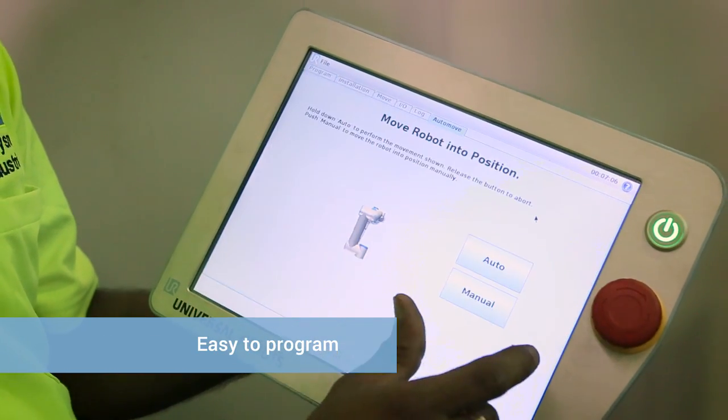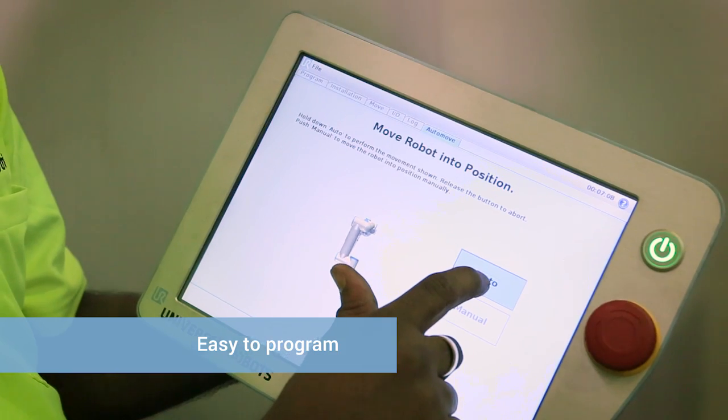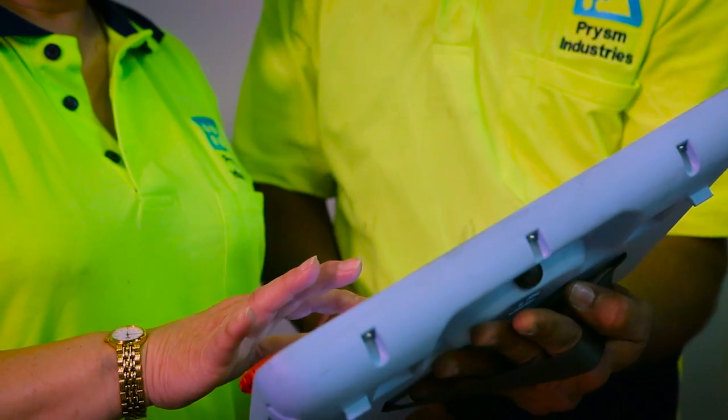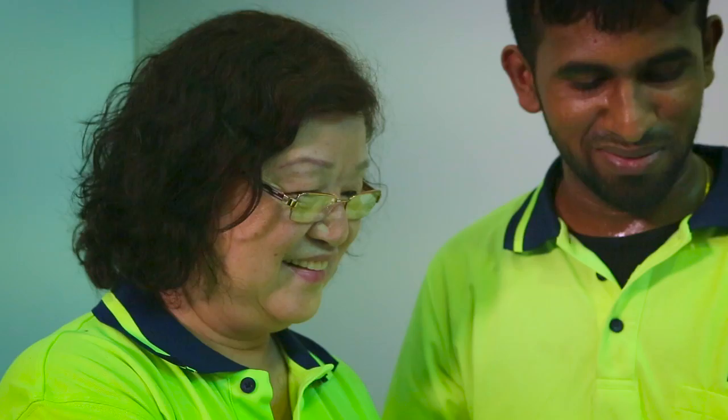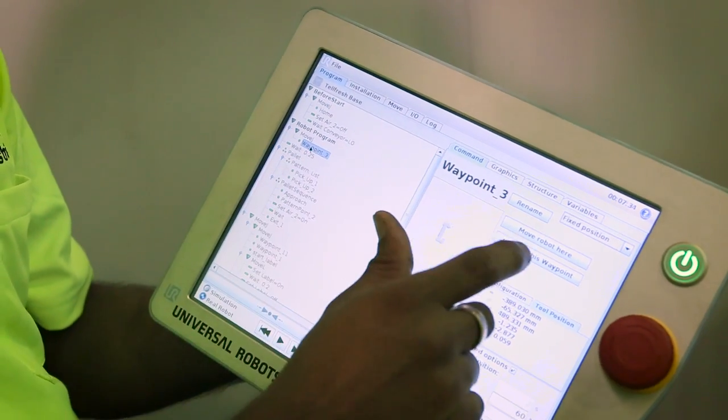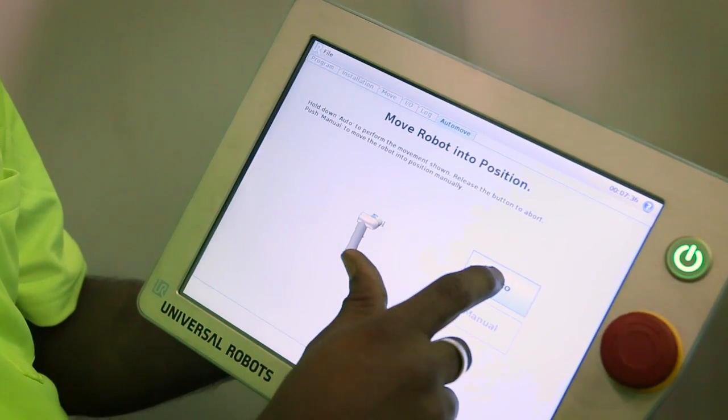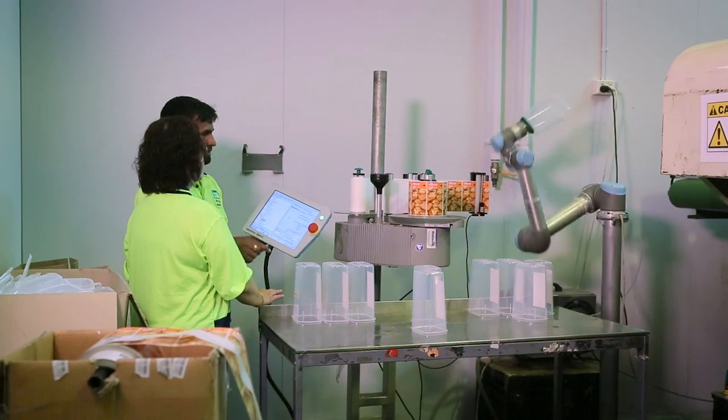An easy-to-use intuitive graphical user interface with a free drive function enables an operator to reprogram the robot by either grabbing the robot arm to set the waypoints in the program and show it how a movement should be performed, or by using arrows on the touch screen.